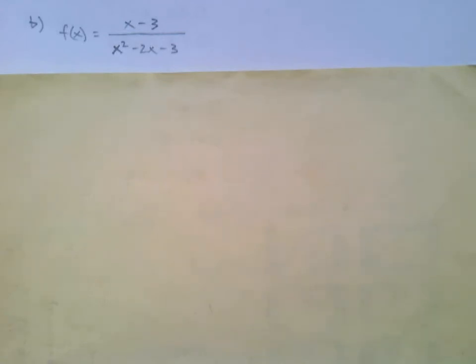Now we're not given a graph, so that definitely makes things more challenging. We have this rational function f(x) equals x minus 3 over x squared minus 2x minus 3.